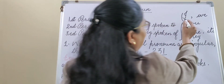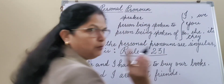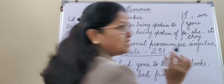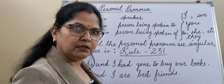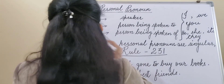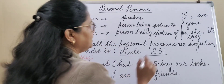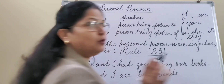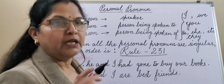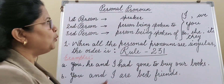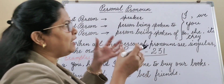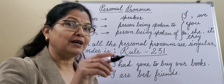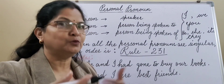First person: I — singular, we — plural. Second person: you — used as both singular and plural. Third person: he, she, and it — singular; whereas they — plural. Now we have to understand, when we club first person, second person, and third person in one sentence, what do we do?